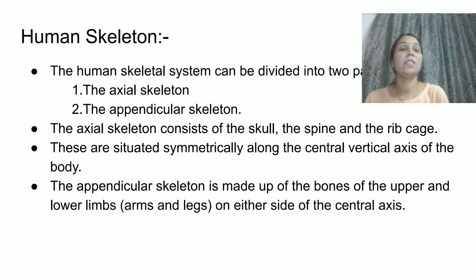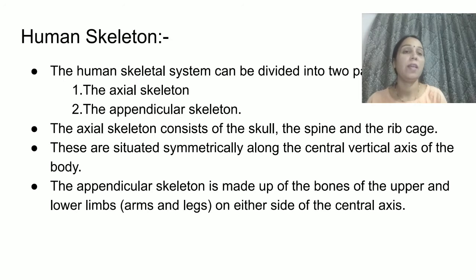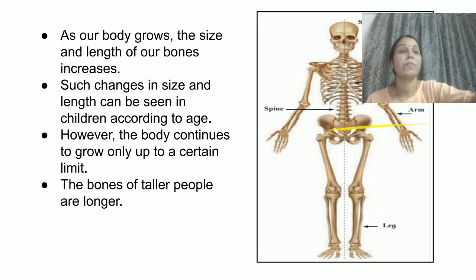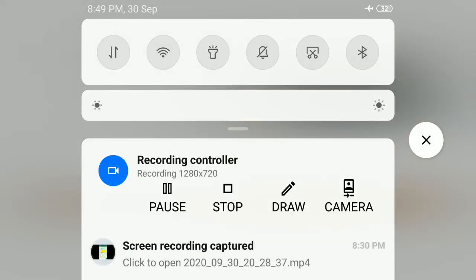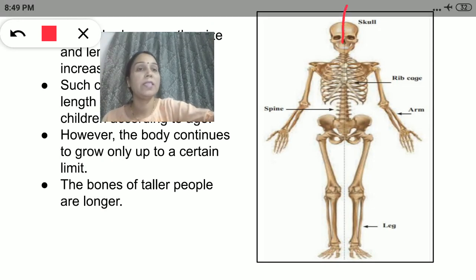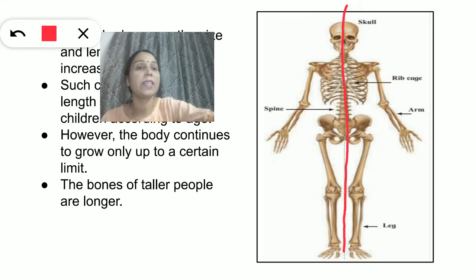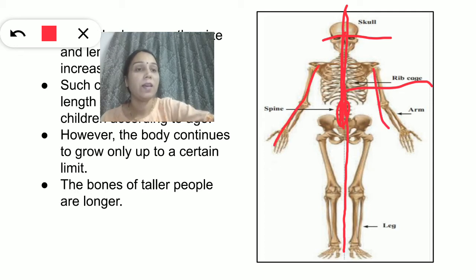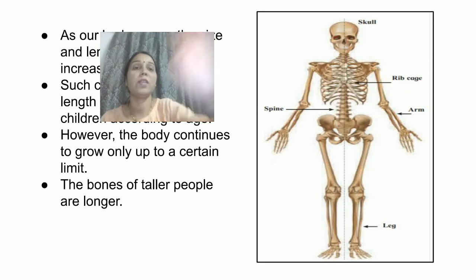The appendicular skeleton is made up of the bones of the upper and lower limbs. Your hands and legs are called limbs. So the appendicular skeleton is nothing but the bones of the arms and legs on either side of the central axis. The axial skeleton includes the skull, rib cage, and spinal cord, while the bones of arms and legs form the appendicular skeletal system.